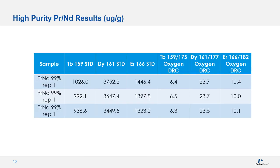The results for the high purity praseodymium neodymium sample show impurities of terbium, dysprosium, and erbium. Comparing standard mode results versus oxygen DRC results, there is quite a bit of interference read back in standard mode giving false positives, whereas the more accurate results and quantification were obtained in oxygen DRC using a mass shift. This is the true power of a multi-quadrupole system.